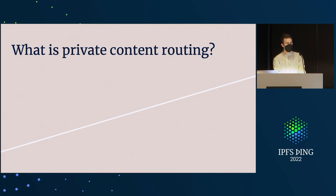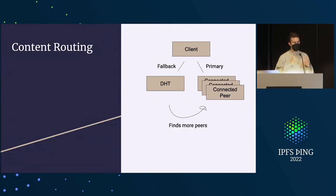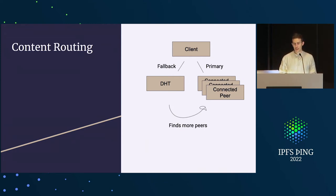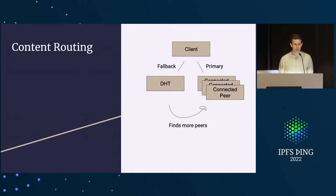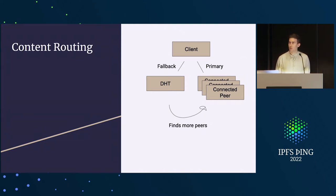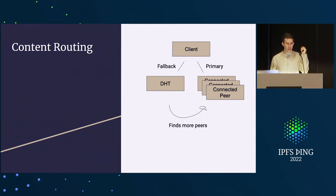Today we're talking about private content routing. The main structure we're seeing in data transfer in something like IPFS is: you've got a client, you've got some connected peers, and in the current world, routing looks like when you're trying to look up a CID, you first talk to your connected peers to see if any of them have it. If not, you fall back to a DHT lookup which gives you more connected peers. The initial lookup is over bitswap on your current connected peers.